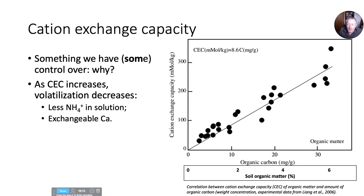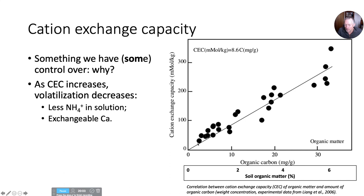Cation exchange capacity is something we have control over through soil health management practices to conserve or increase soil organic matter content. Here we have organic carbon or soil organic matter content below and the cation exchange capacity — the amount of positively charged nutrients including ammonium that the soil can hold and release. CEC increases drastically with organic matter. Most of our soils are at two percent or less organic matter, but if we can get it up to two percent we can double the cation exchange capacity, which is going to lower the risk of volatilization.